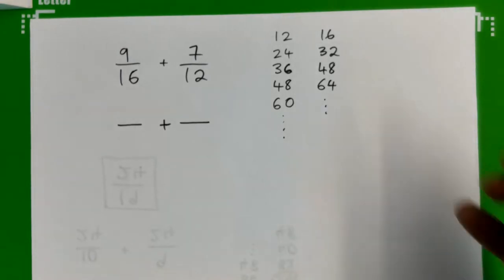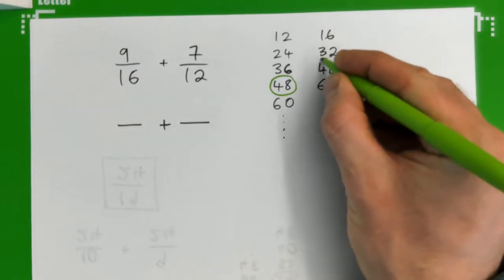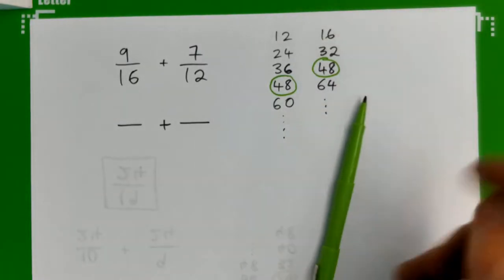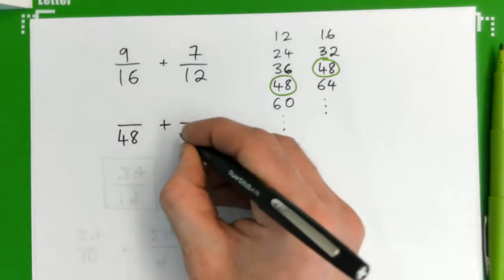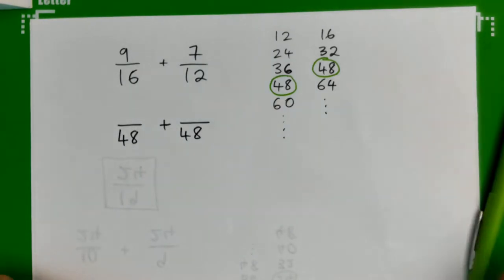Can we see a lowest common multiple now? You've got 48 in each as a lowest common multiple. So we can put 48 down here. And we think...